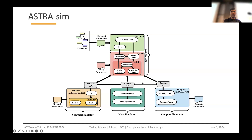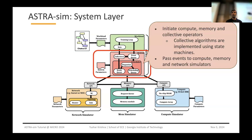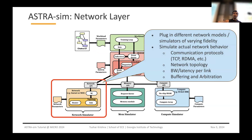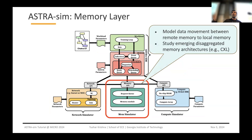AstraSim is trying to faithfully capture the design space presented earlier — workload, system, compute, memory, and network. The workload layer is where the Chakra Execution Traces come in; it parses them, identifies different operators, and passes them to the system layer. The system layer takes these operators, potentially breaks them down further — analogous to a compiler or collective library — and passes them as events to compute, memory, and network simulators via APIs. The network simulator API allows you to plug in your own network simulator at varying fidelity levels. The compute API supports different compute simulators, and the memory API supports remote memory simulators for studying disaggregated systems.